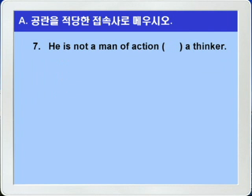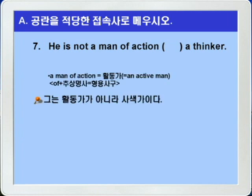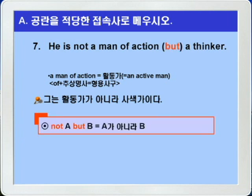7번입니다. He is not a man of action, blank, a thinker. a man of action은 '활동가'라는 의미입니다. 정답은 등위 접속사 'but'이 들어가면 되겠습니다. not A but B 하면 'A가 아니라 B'라는 뜻이죠. 그는 활동가가 아니라 사색가이다. 정답: he is not a man of action, but a thinker.